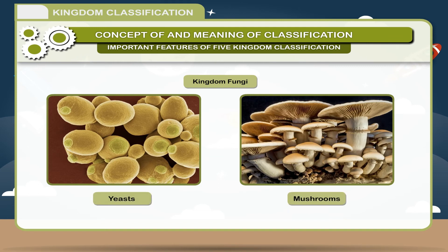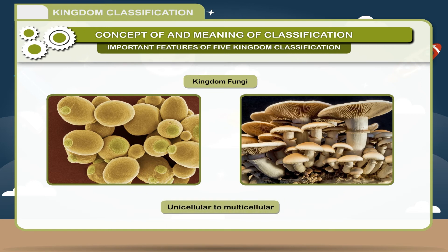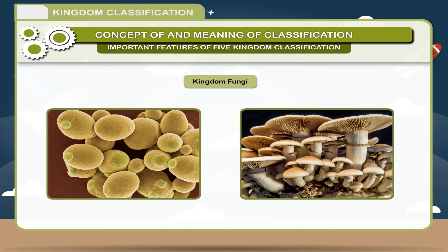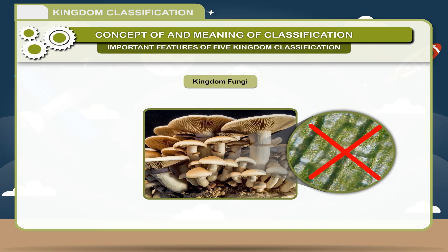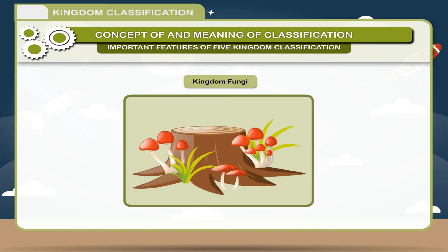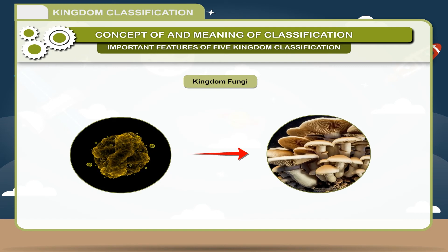Kingdom Fungi: This kingdom includes all molds, yeasts, and mushrooms. They are unicellular to multicellular and cells have a well-defined nucleus. Fungi may resemble plants but they cannot make their own food — they lack chlorophyll. They grow on organic matter, that is, dead and decaying matter. They are saprophytic in nature. Fungi reproduce through spores.